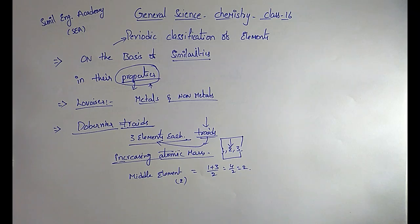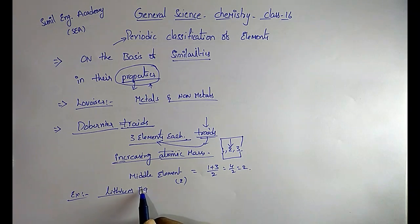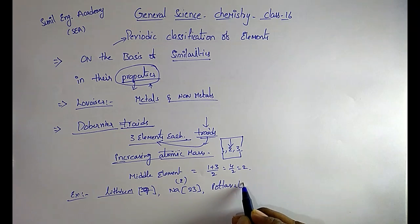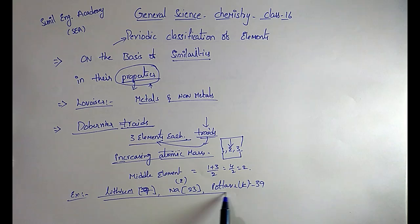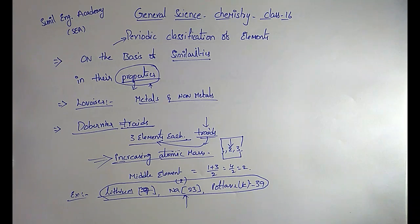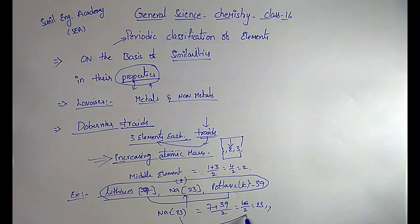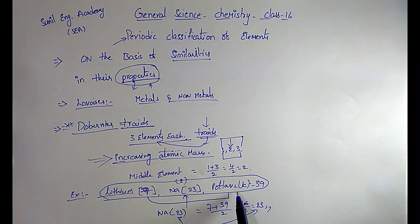For example, taking lithium, sodium, and potassium as a triad: lithium has mass nearly 7, sodium has mass 23, and potassium has mass 39. I have written all these in increasing atomic masses. Here the middle element sodium — 23 is equal to the average of first and third: 7 plus 39 divided by 2, that is 46 by 2, which equals 23. So according to Dobereiner's Triads, the mass of the middle element is roughly the average of the remaining two.